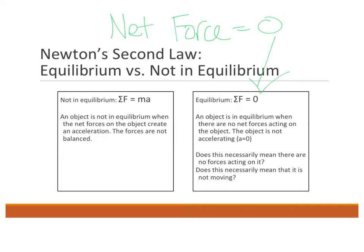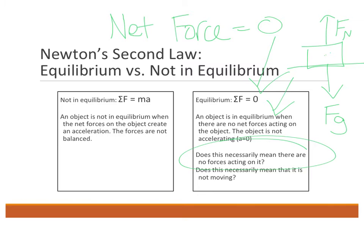With zero net force, you should have no acceleration. For example, if you had a book sitting on a table, it's got FG pulling it down and normal force pulling it back up. Because the book is at rest and not accelerating, it is at equilibrium. Being balanced doesn't mean there aren't any forces — it just means they cancel each other out, so the normal force is equivalent in magnitude to the gravitational force.